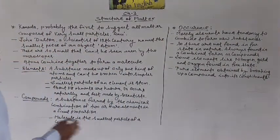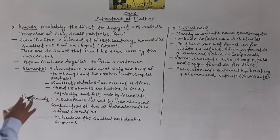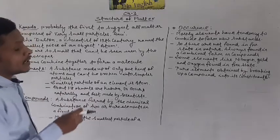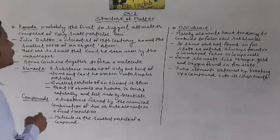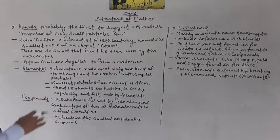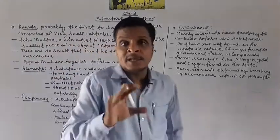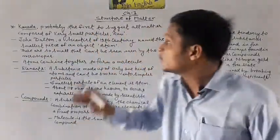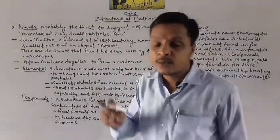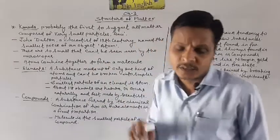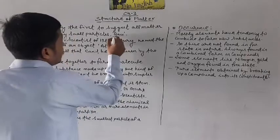Matter ke baare mein, Kannad jo the — inko mana gaya hai probably the first to suggest all matter is composed of very small particles. Kannad ne bataya tha ki jo bhi matter hai, they are composed of very small particles. Aur inhon ne hi un chhote particles ko naam diya tha — Anu.